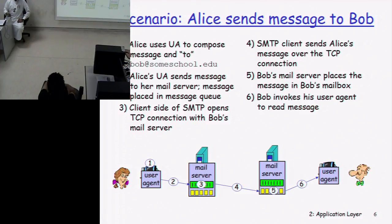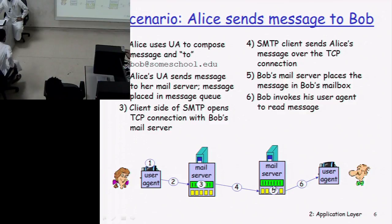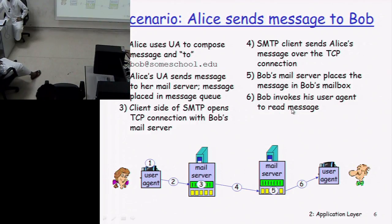Bob's mailbox is what you call his inbox. Once Bob comes online, he invokes his user agent, enters his username and password, and retrieves his mails from his mailbox into his user agent, where he can read his mail messages. This is the complete scenario of how an email message is sent.